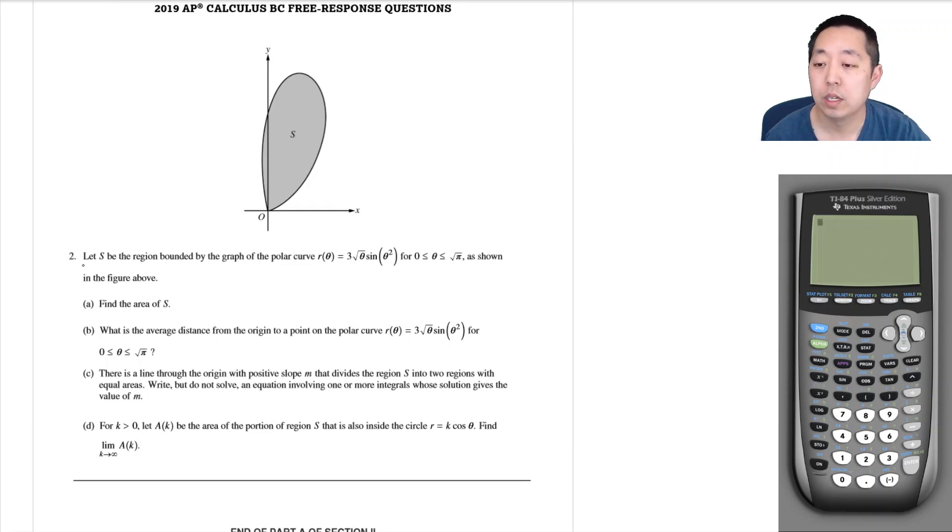In the description, so let S be the region bounded by the graph of the polar curve. Find the area of S. Well, first of all, they gave you the bounds here, so the area is just given by this integral one half r squared d theta. In this case I'll bring the one half out and I'm going to integrate. The bounds are from zero to root pi to do all of it.